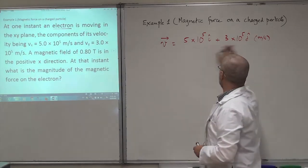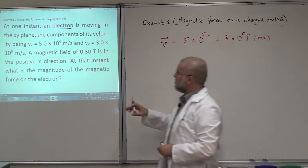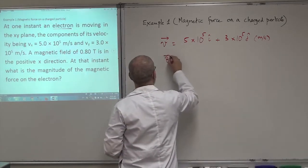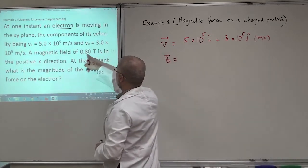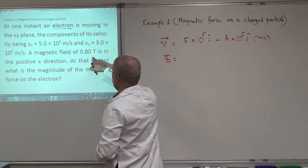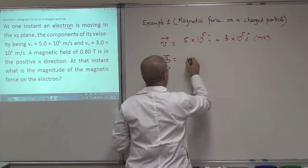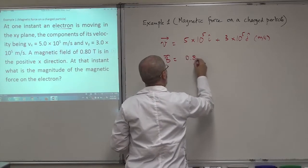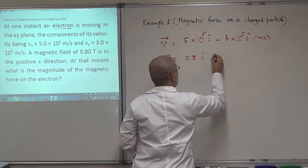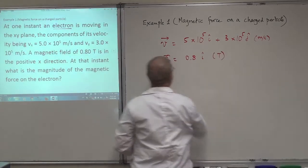The velocity is in a plane, in the x-y plane. A magnetic field B is given — this is the magnitude and it is in the positive x direction — so it is 0.8 î Tesla.